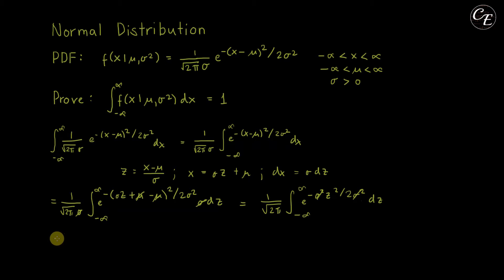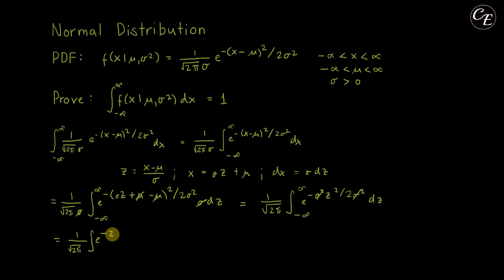Then we are left with 1 over square root of 2 pi, times the integral of e raised to negative z squared over 2, dz, from negative infinity to positive infinity.